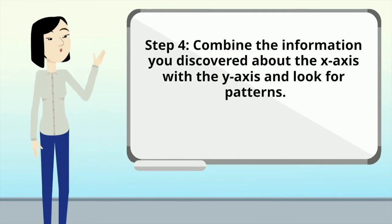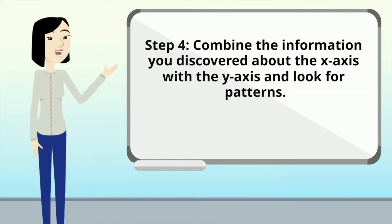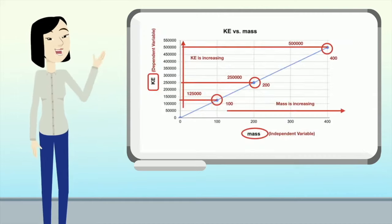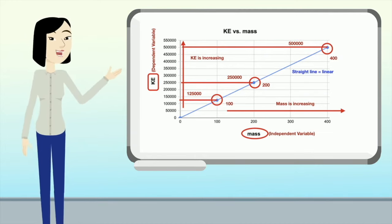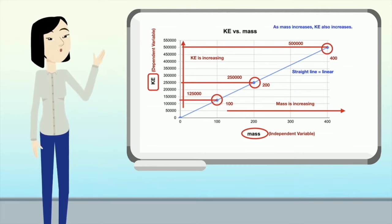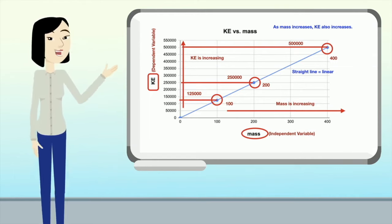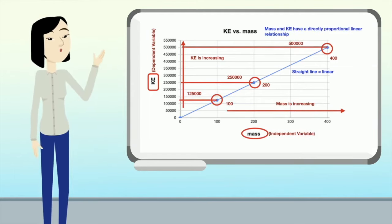In step four, you're going to combine the information you discovered about the x-axis with the y-axis and look for patterns. As we can see, mass is increasing and KE is increasing. We can also see that it's a straight line, so it's linear. And as mass increases, the KE also increases. So that means mass and KE have a directly proportional linear relationship.